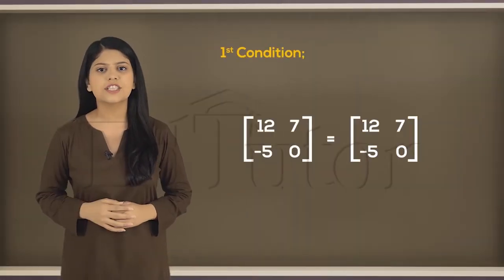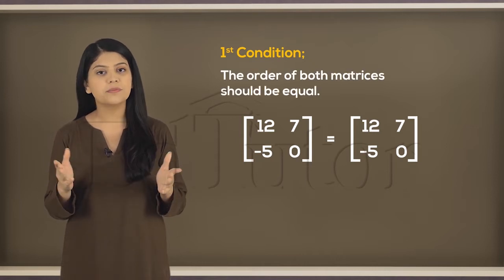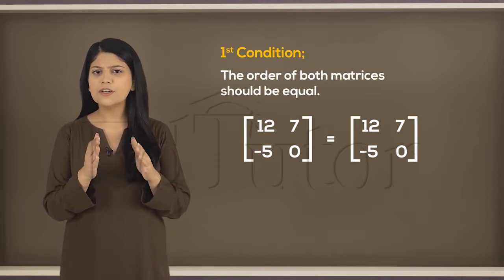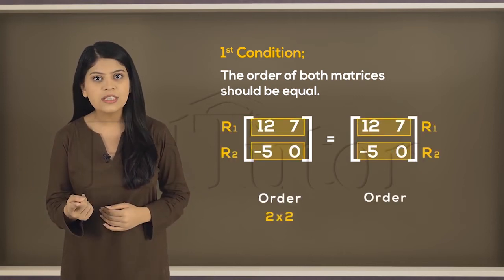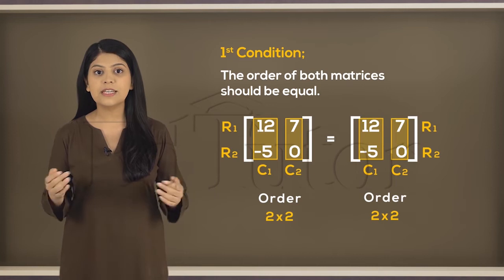The first condition is that the orders should be the same. We have covered the order of a matrix in our previous lesson. It is the number of rows by the number of columns in a matrix.